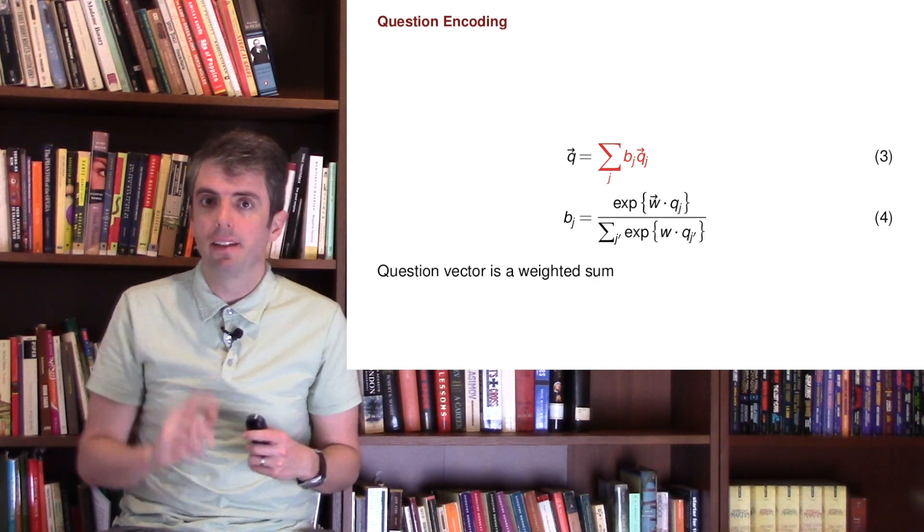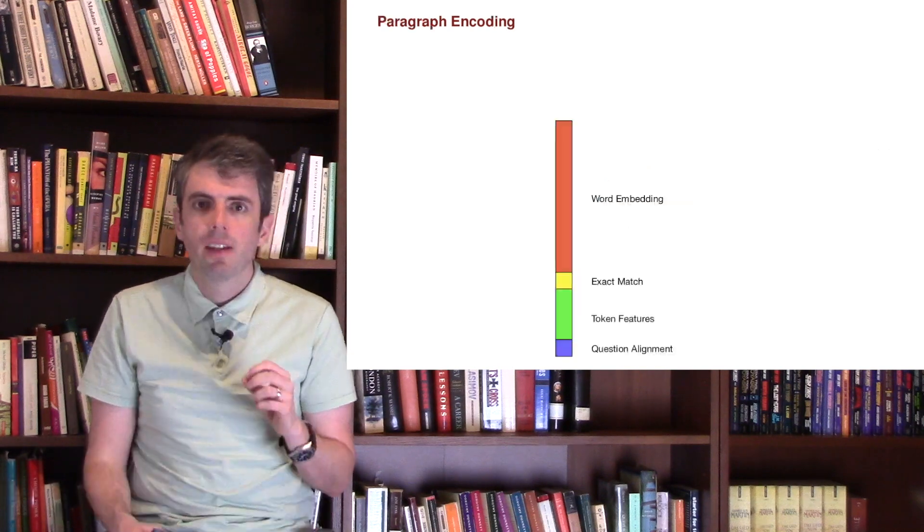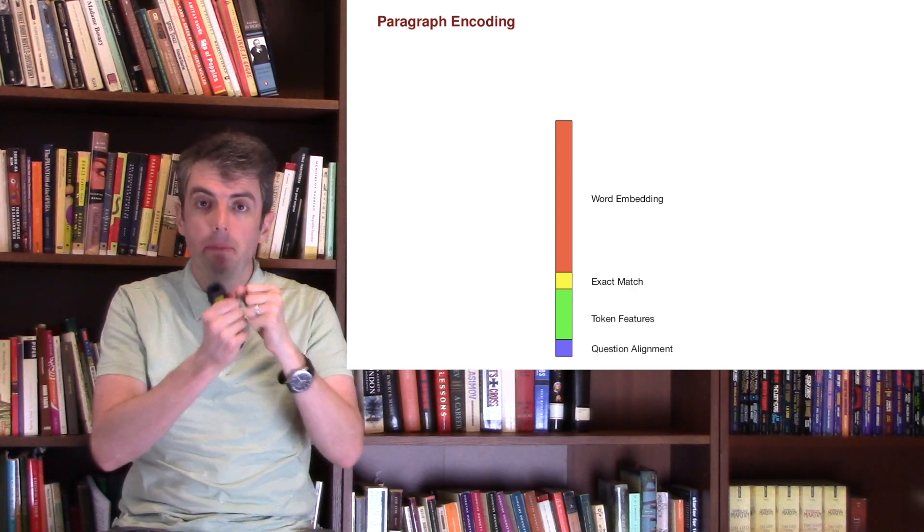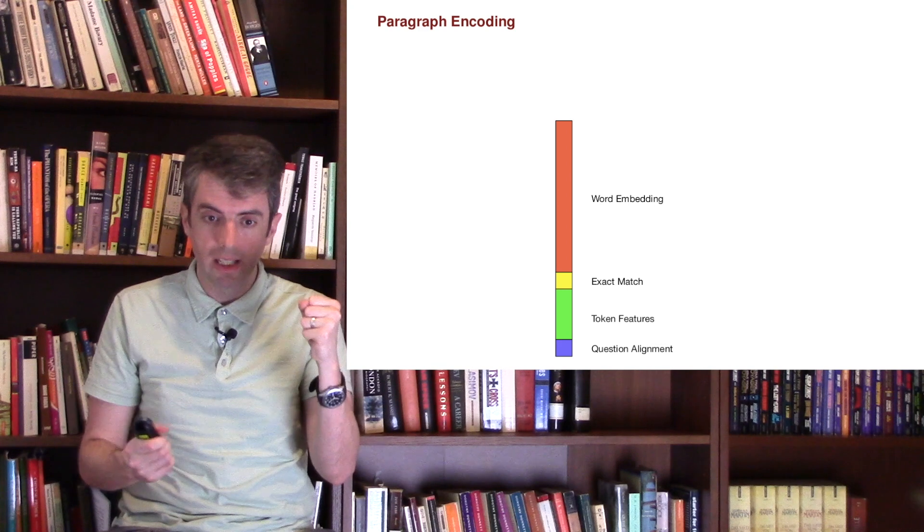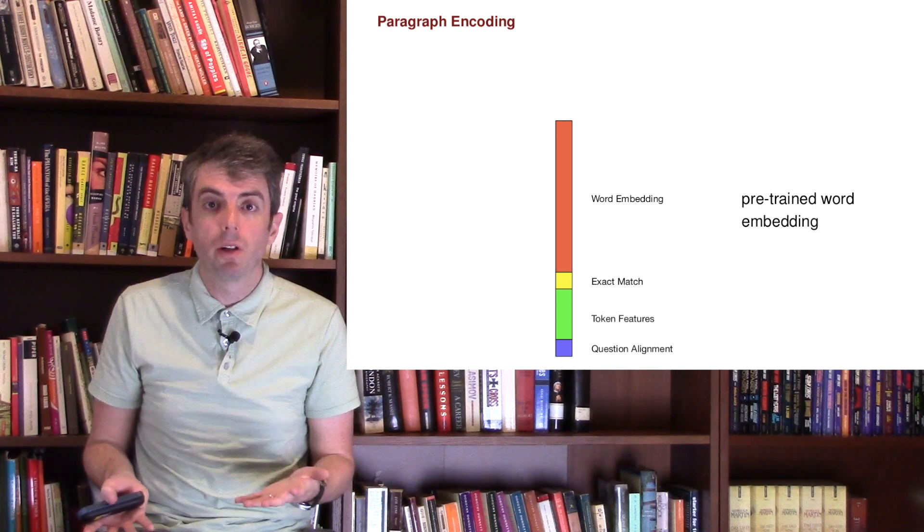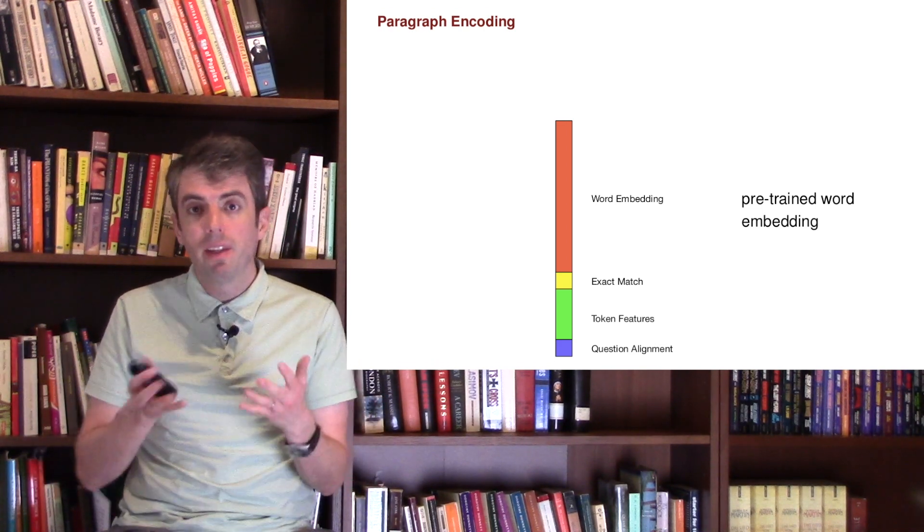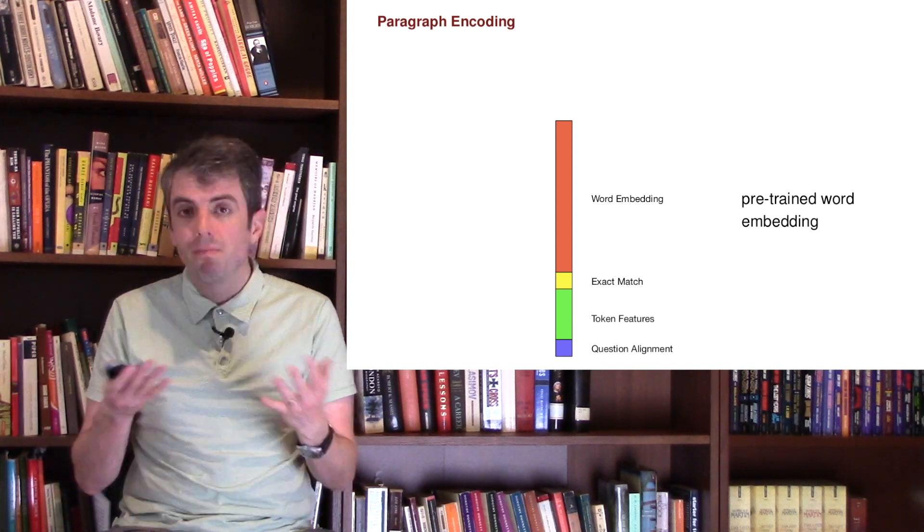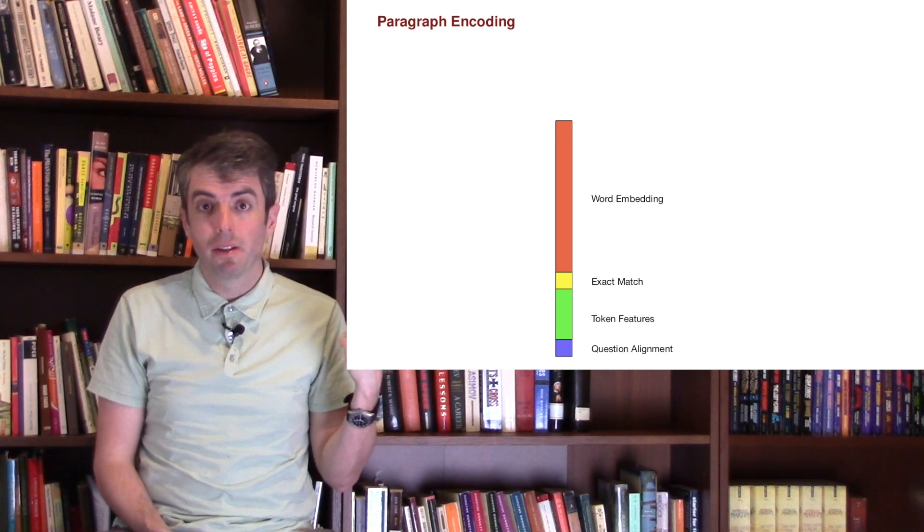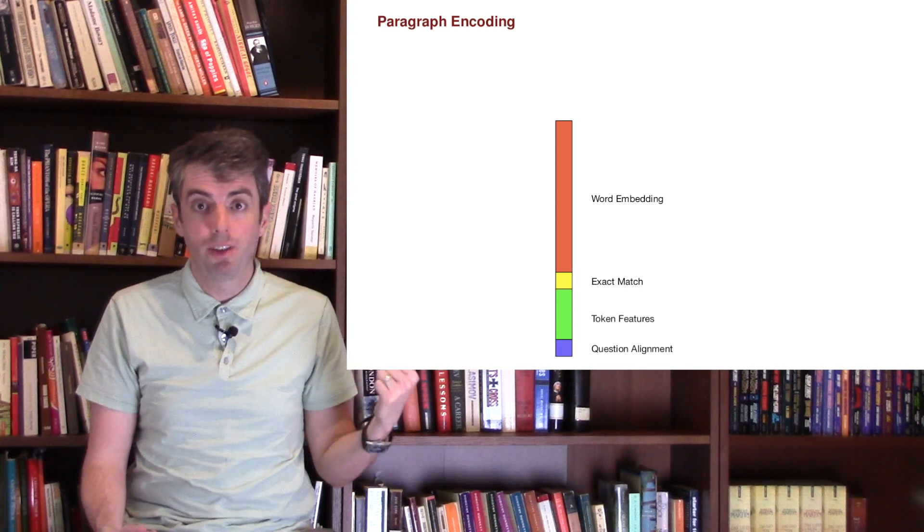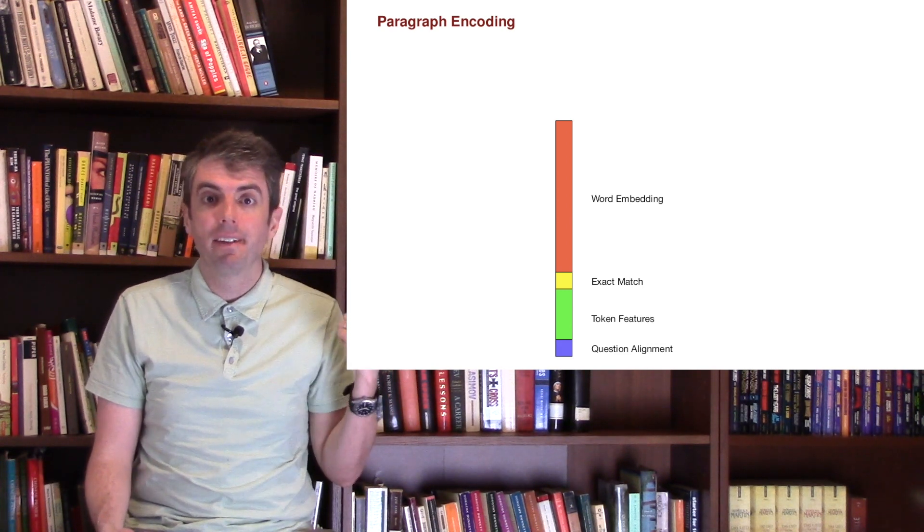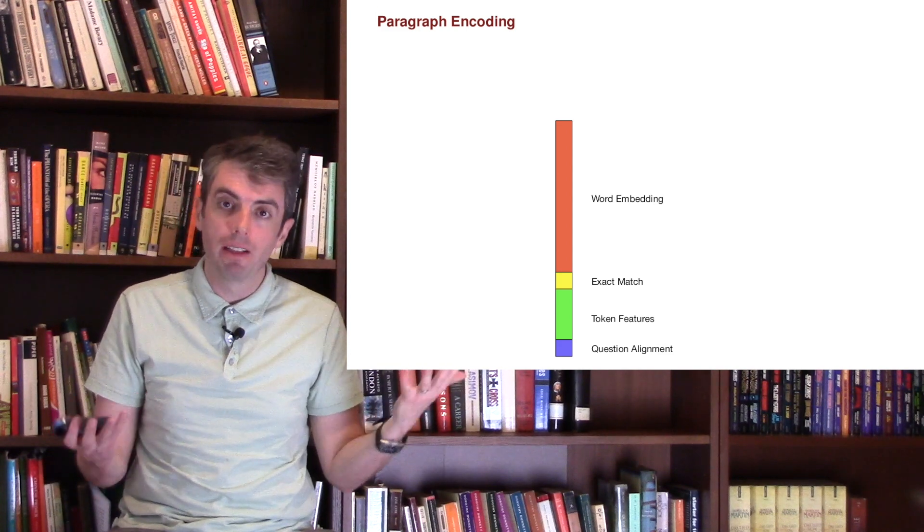Representing the question vector is relatively straightforward. Representing the individual words in the passage is a little bit more complicated. Let's talk about the features we're going to use to build up our passage representations. You can think about this as a big long vector that's the concatenation of several smaller vectors. First, you can use pre-trained word embeddings from GloVe, from Word2Vec, your favorite word embeddings. This carries a lot of semantic information and encodes what words mean based on large unsupervised text collections. Another feature is a really simple exact match feature - is there an exact match between something in the question and the passage text? This is really useful for finding relevant passages.